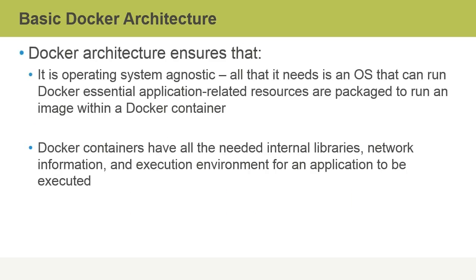The basic Docker architecture of client and server ensures that the way containers execute is OS-agnostic. And this, again, is the fundamental premise on which Docker containers are built and distributed — that it can run on any OS that has all the essential application services required, and they are adequately packaged to run an image within a Docker container. By keeping the architecture simple, Docker achieves this goal.